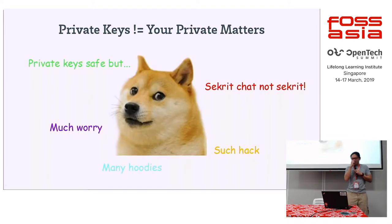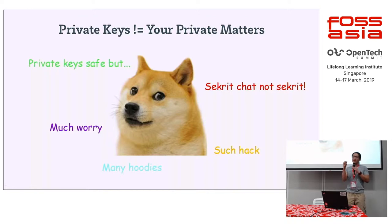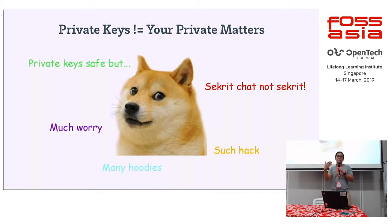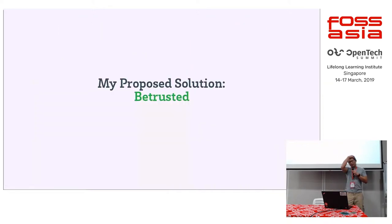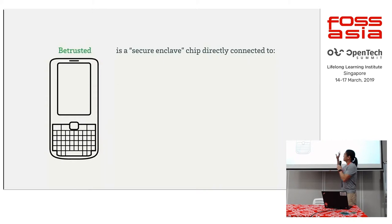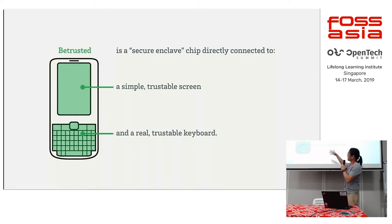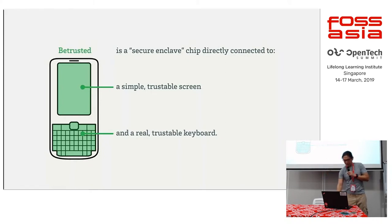Essentially, private keys are not the same as your private matters. The secure enclave protects your private keys from remote code exploits, but doesn't protect you from someone inside your machine spying directly. This is becoming a more and more realistic threat model. My proposed solution is something I call Retrusted — the idea is to have a separate secure enclave with a simple trustable screen and a trustable keyboard attached to it.